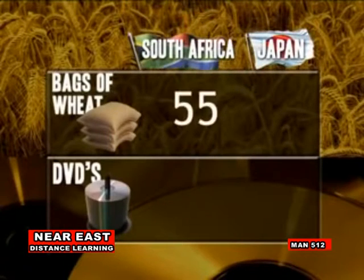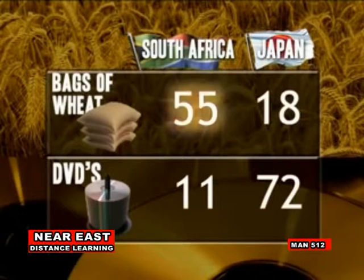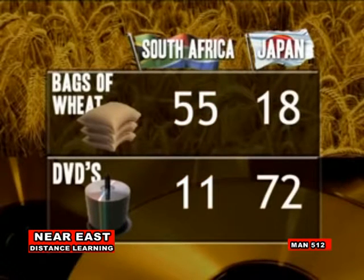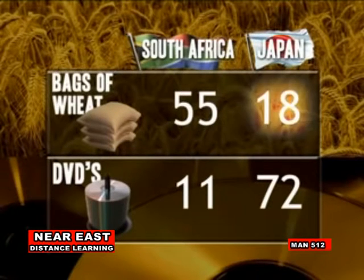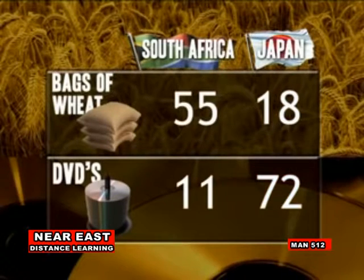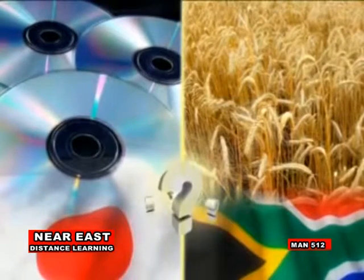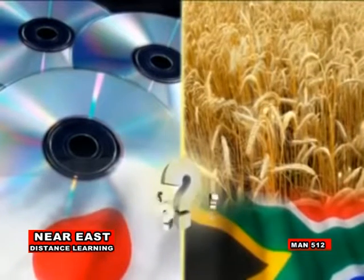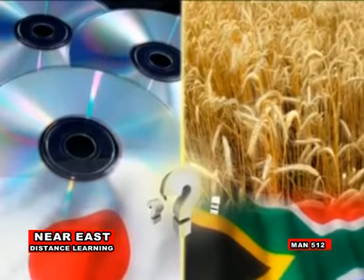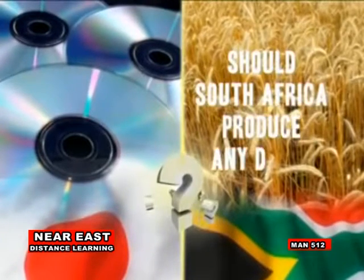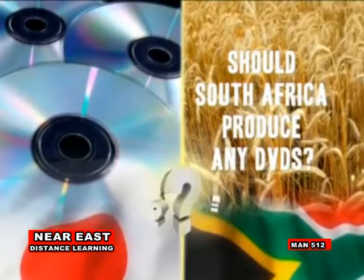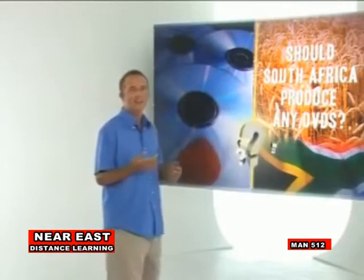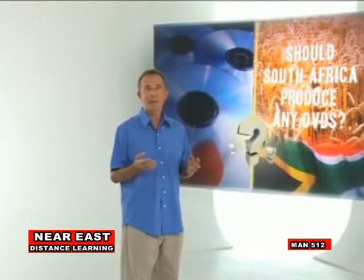Over a certain time period, South Africa can either produce 55 bags of wheat or 11 DVDs using all their resources. Japan, on the other hand, can either produce 18 bags of wheat or 72 DVDs using all the available inputs they have. Japan is obviously much more efficient in the production of DVDs than South Africa, while South Africa is much more efficient in the production of wheat than Japan.